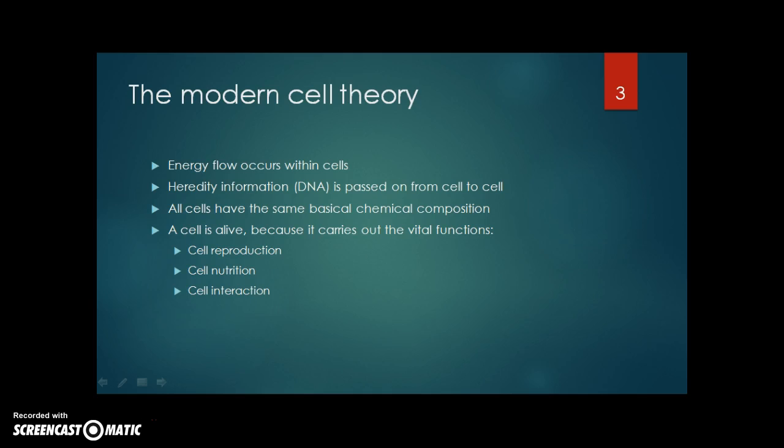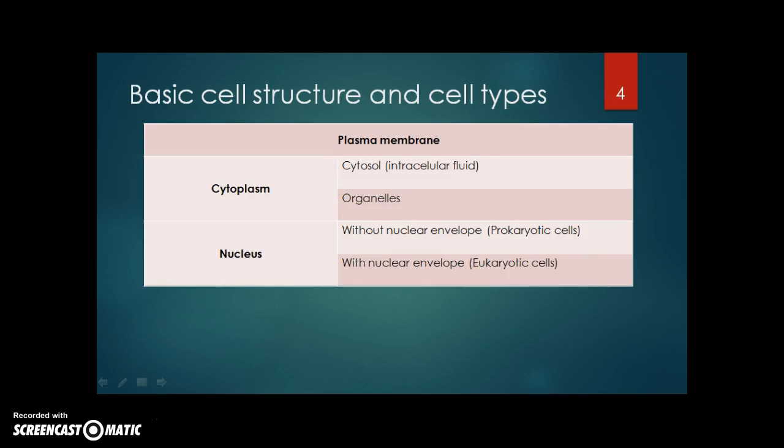Every cell has a basic structure. And regarding the different structures that we can find in a cell, we can differentiate different types of cells. Every cell has a plasma membrane. They have also a cytoplasm. In the cytoplasm, it's possible to differentiate a cytosol, which is an intracellular fluid.